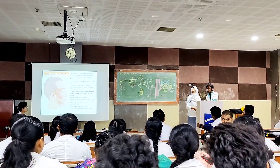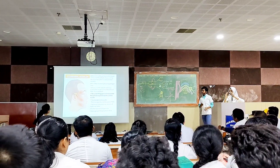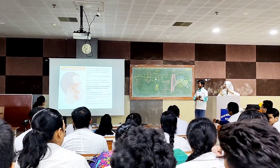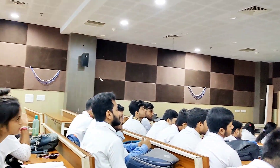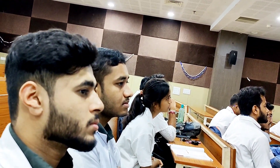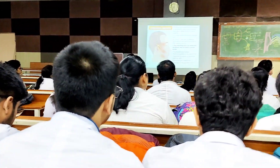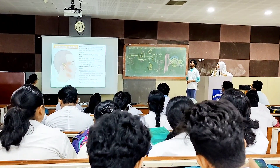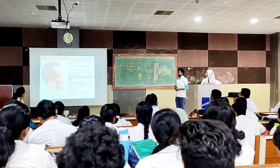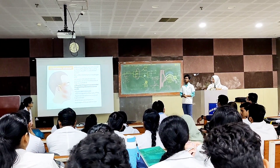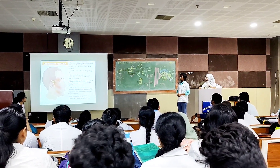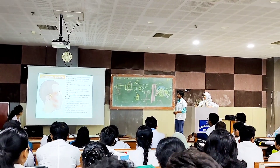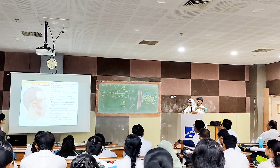Moving on to the next slide — last but not the least, trigeminal neuralgia. The last topic of our presentation today is trigeminal neuralgia. It is caused by an issue in the trigeminal nerve. It is characterized by paroxysmal attacks — meaning the attacks are increasing or recurring constantly. It is characterized by paroxysmal attacks of excruciating facial pain of sudden onset and very short duration. It is often initiated by touching a trigger area, and it occurs in the area of cutaneous distribution of one or more branches of the trigeminal nerve, usually V2 and V3.